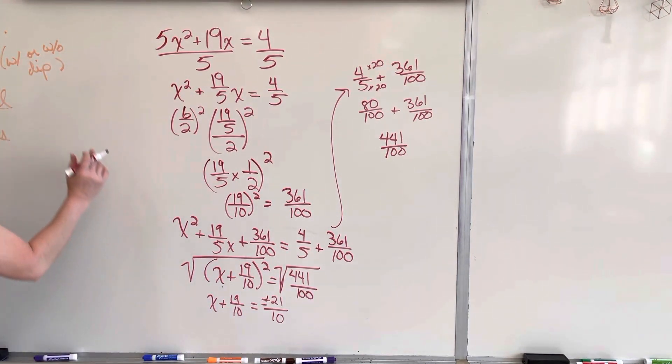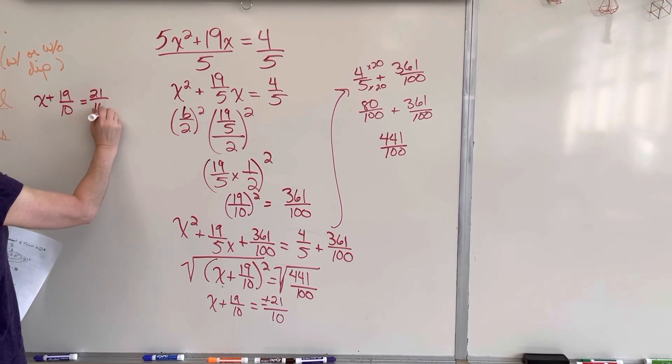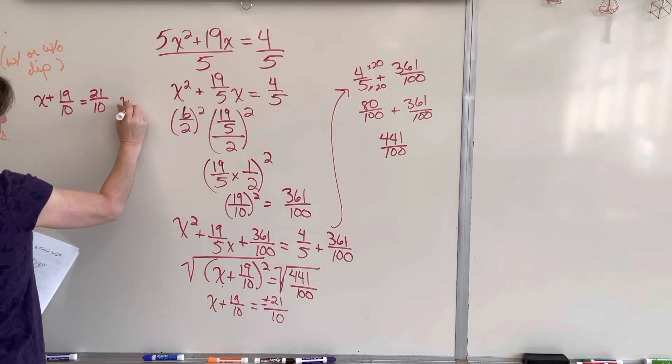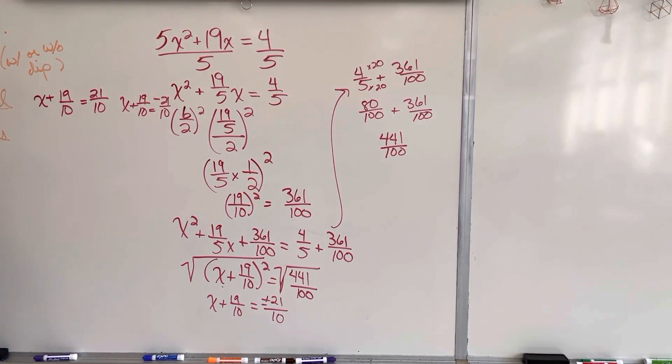Now, we have to separate this up into two problems. I've got x plus 19 over 10 equals 21 over 10. I've got x plus 19 over 10 equals negative 21 over 10. And I still have to do that math. Minus 19 over 10. Minus 19 over 10.